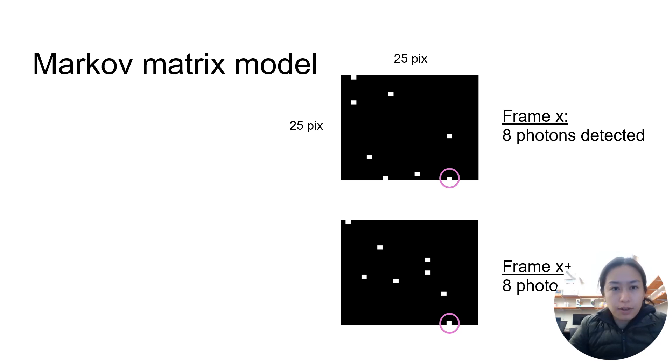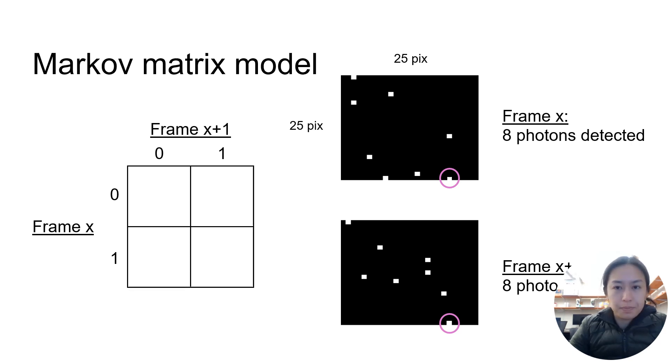What we do in this case is define a transition matrix, where the rows represent a zero or one detection in the first frame, and the columns represent the same in the second. What we do in each box is tally the number of pixels which detected the corresponding events in each frame.